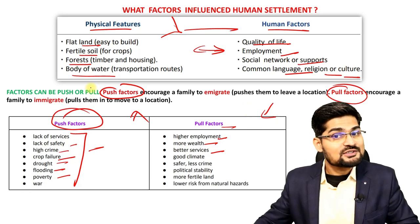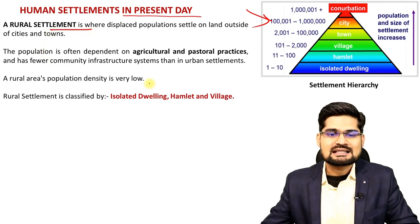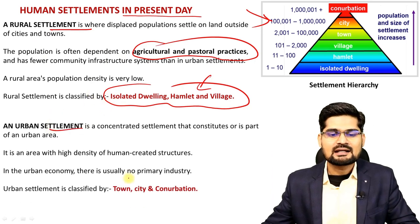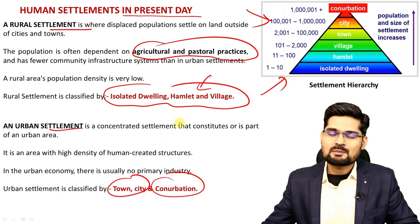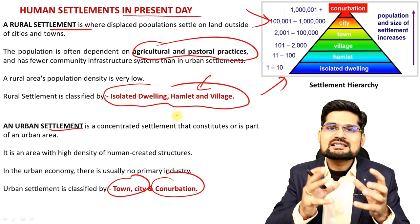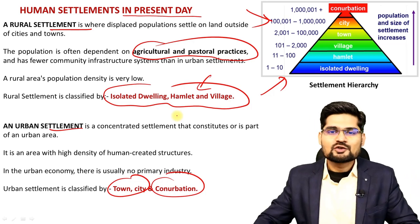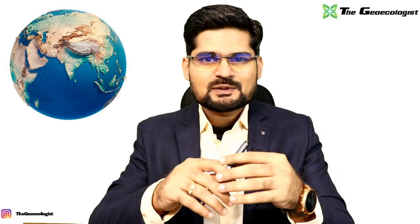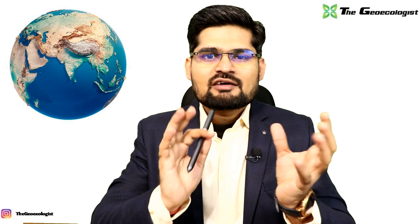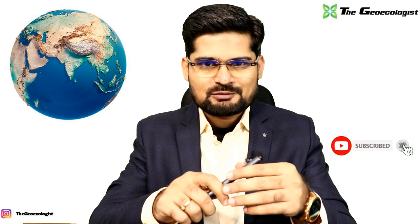Human settlements in the present day follow a hierarchy to be discussed in future lectures: rural settlements with their characteristics — isolated dwellings, hamlets, villages, agricultural and pastoral practices — and urban settlements including towns, cities, conurbations, mega cities, megalopolises, and metropolises. This is the modernity of human settlements. The evolution from past knowledge to present knowledge is what we learn as the evolution of human settlement. Future sessions will cover factors affecting settlement patterns in more detail.